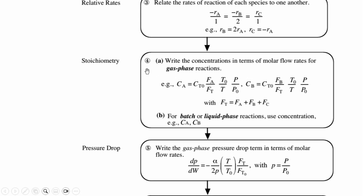Then we go to stoichiometry, again the same step but a bit different in terms. We write the concentrations in terms of molar flow rates. If you remember, we derived equations in terms of conversion, but from this chapter we will relate it in terms of molar flow rates.